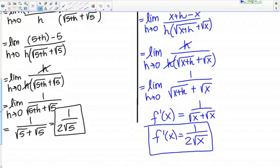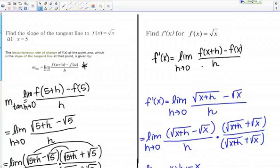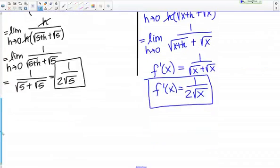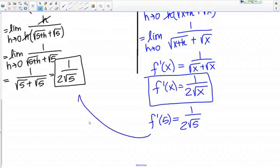now compare that to what we had before. Before we were finding the derivative at the point x equals 5, so what if I were to evaluate what I just found, the derivative function at 5, well I get 1 over 2 root 5, which is exactly what I got before.